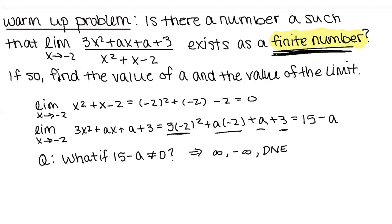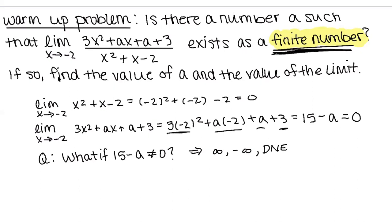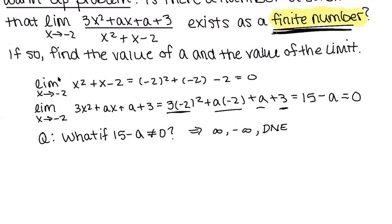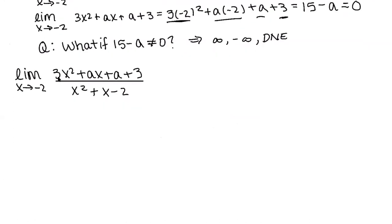What do we need to have 15 minus a equal to? Awesome, yep, has to equal zero because then we'll have zero over zero, we'll have this indeterminate form, and then we can keep going about the limit as usual. So if we know that 15 minus a is zero, do we know what a is? Yep, a is going to be 15, so I can just plug in 15 for a.